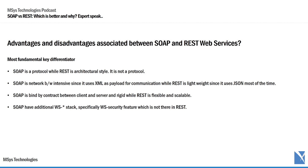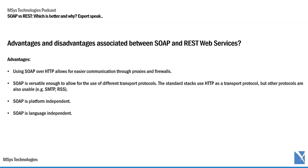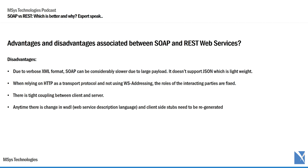Some advantages of SOAP: using SOAP over HTTP allows for easier communication through proxies and firewalls. SOAP is versatile enough to allow different transport protocols — the standard stack uses HTTP, but SMTP and RSS are also usable. SOAP is both platform and language independent. As for disadvantages: due to the verbose XML format, SOAP can be considerably slower due to large payload. It doesn't support JSON, which is lightweight. There is tight coupling between client and server — any change to the WSDL means client-side stubs need to be regenerated.